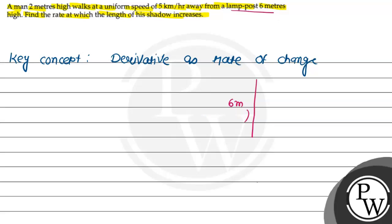So this is the lamp post. Now, this is the direction he is going — moving to the right. So this forms a right angle triangle. Suppose this point is A, this is S, and this is B.